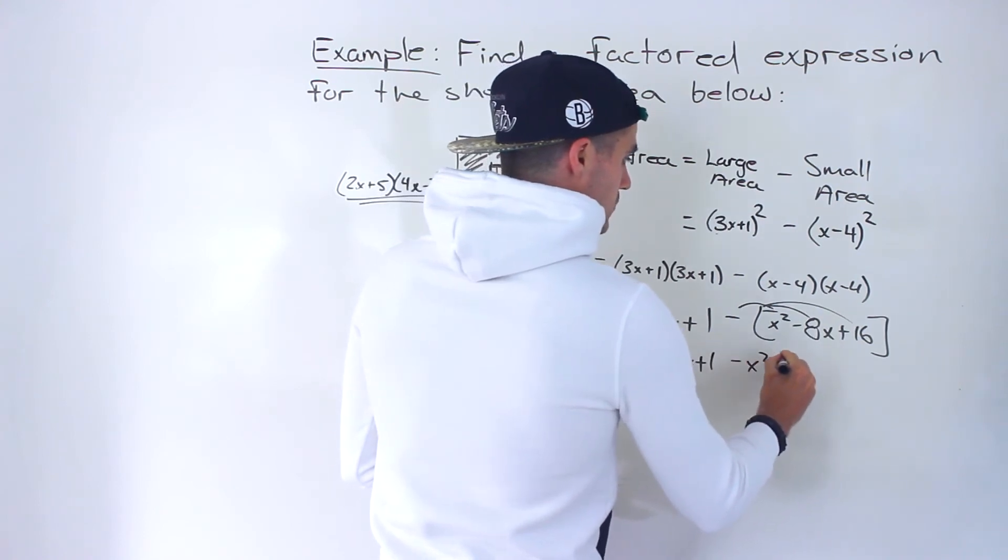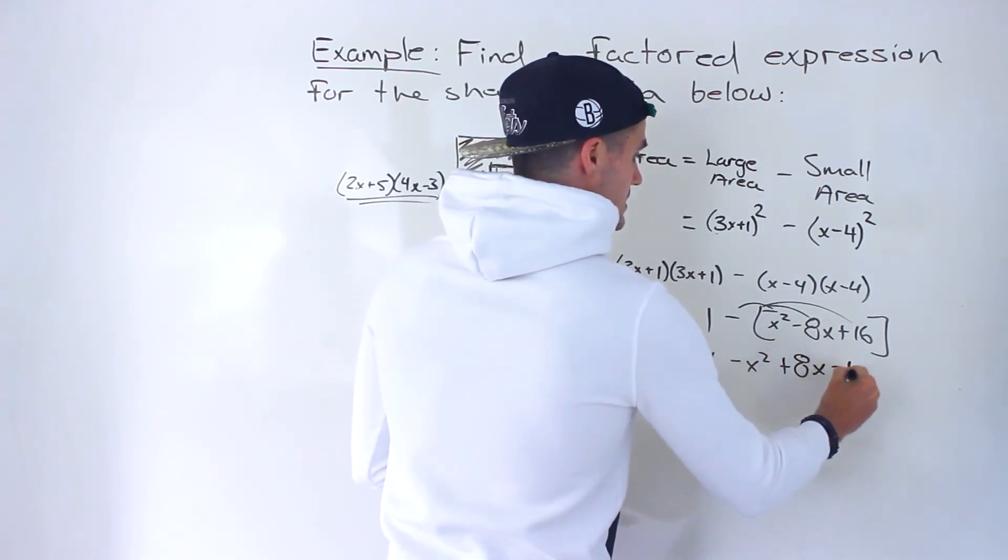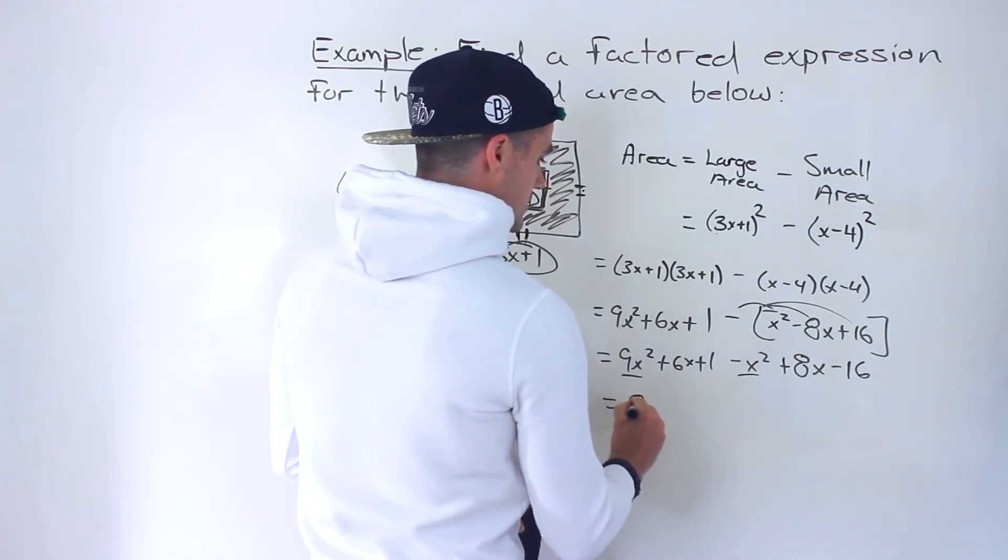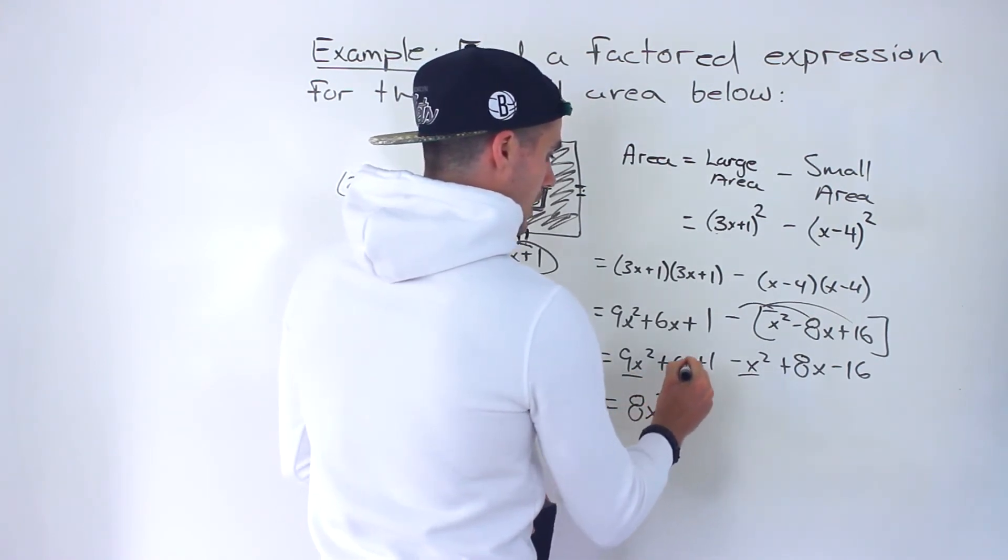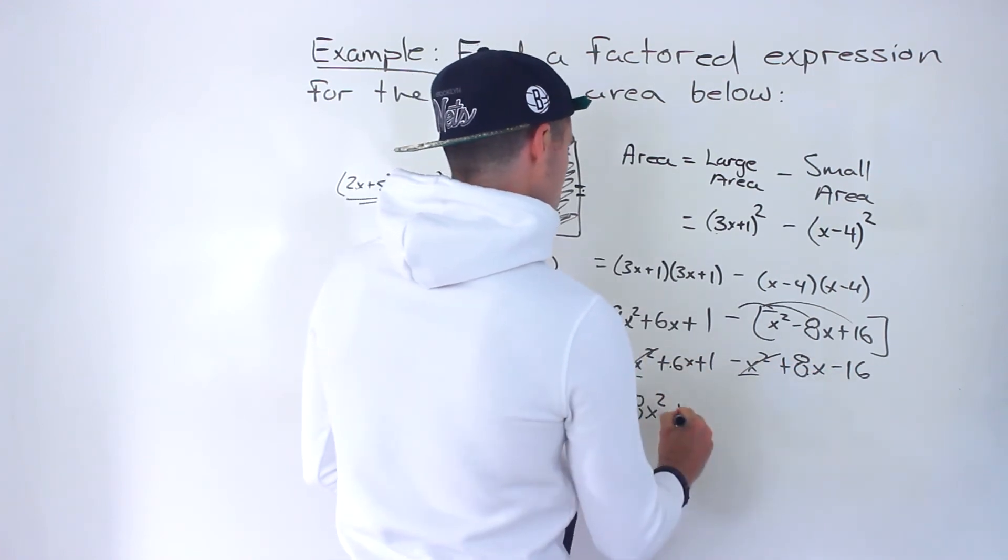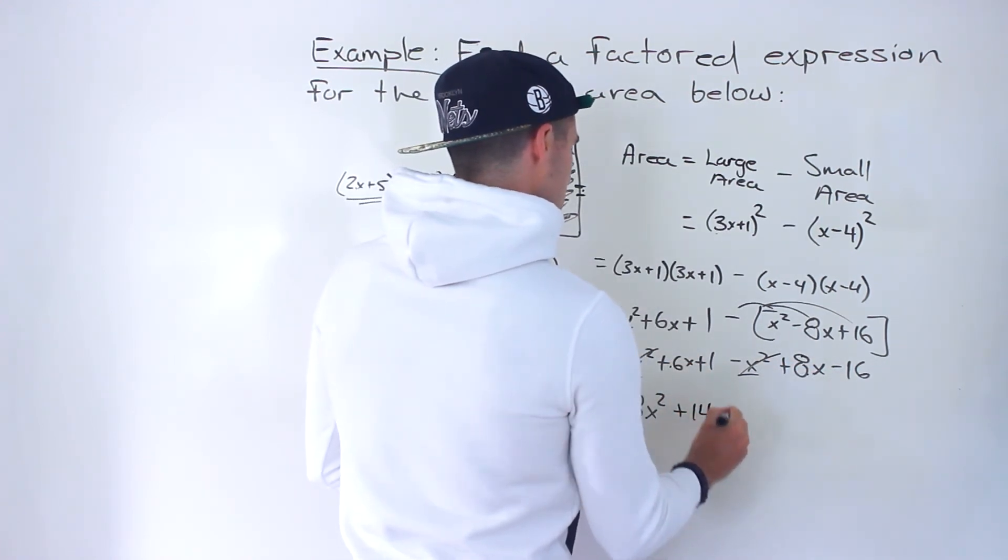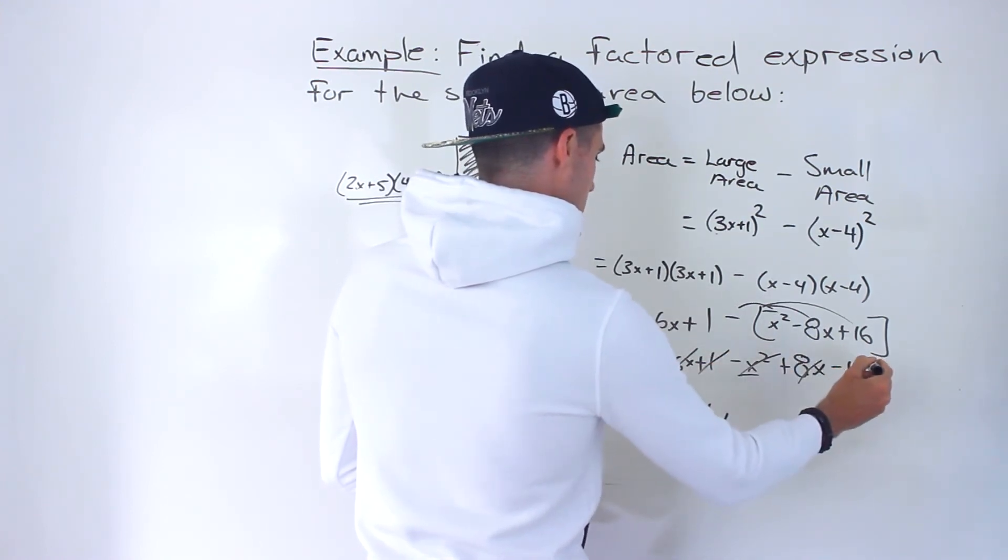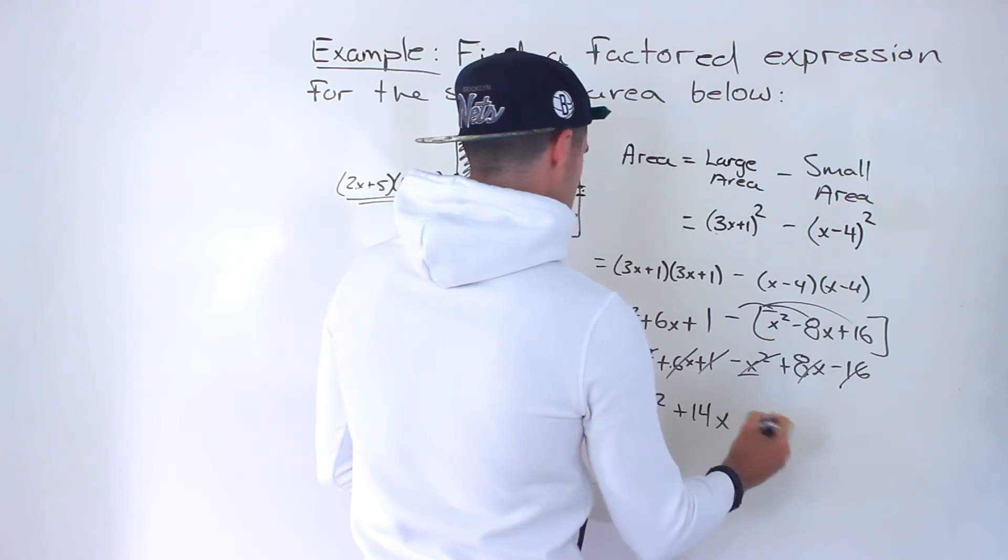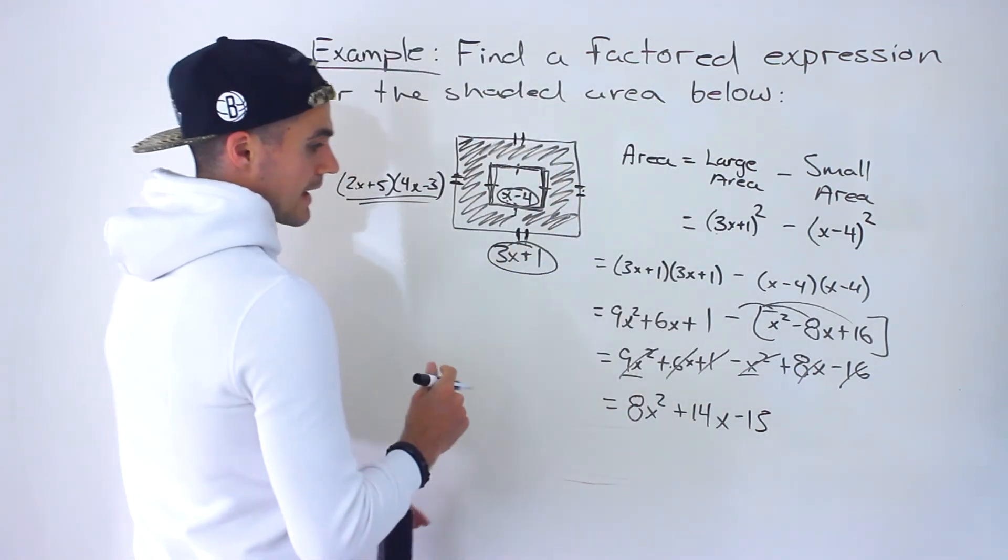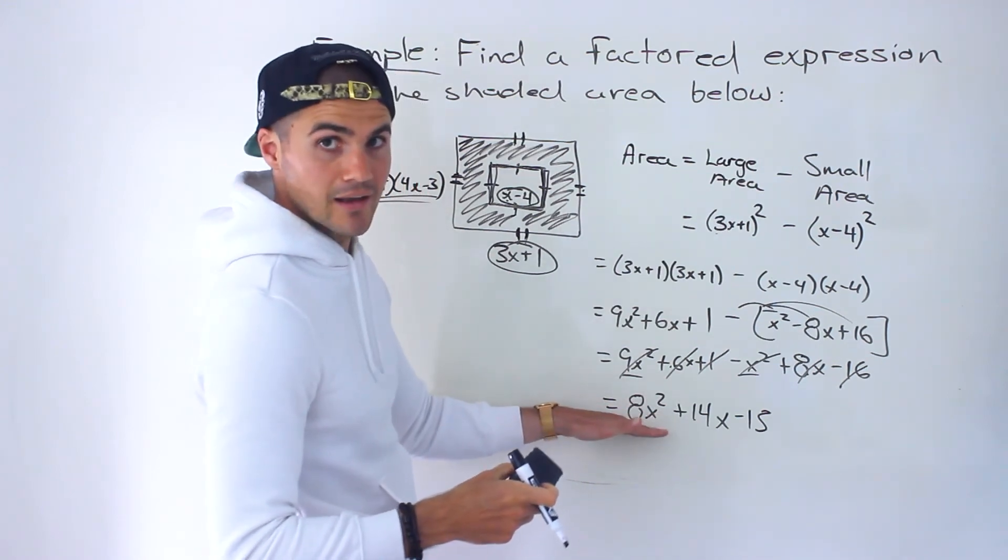Then you distribute into that bracket. So you got minus x² plus 8x minus 16. And then, like terms, the x² terms give us 8x², 6x plus 8x gives us 14x, and 1 minus 16 gives us negative 15. This is expanded.